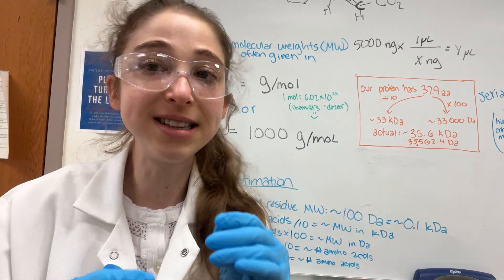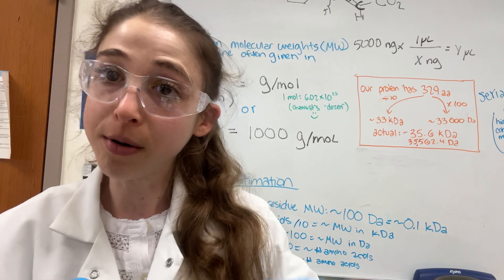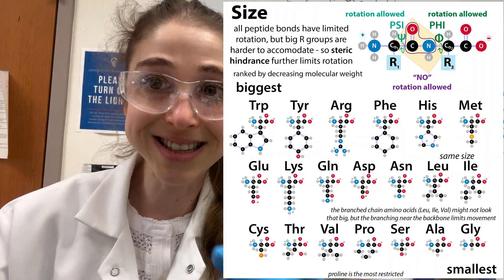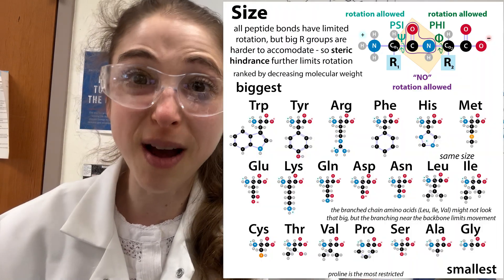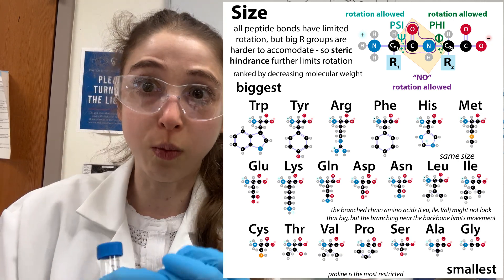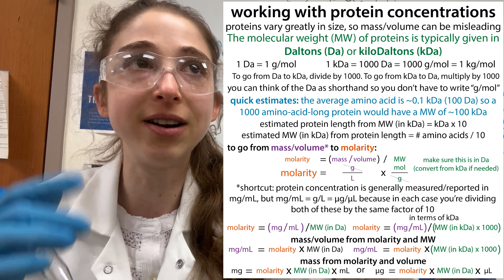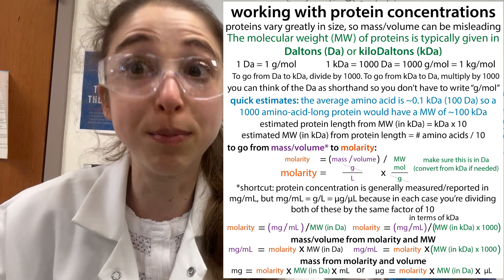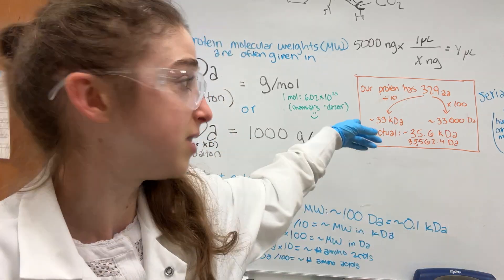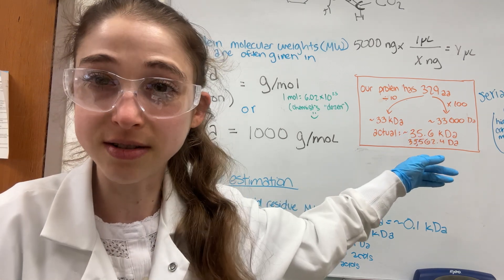Now it's not exact, because the size of different amino acids varies and different proteins have different combinations of amino acids. If you've got a protein with a bunch of glycine, that's really small, it's going to bring that down. If you've got a bunch of tryptophan, that'll bulk you up. So it's just an average — it's nice to be able to just move your decimal place one and get the approximate molecular weight in kilodaltons.